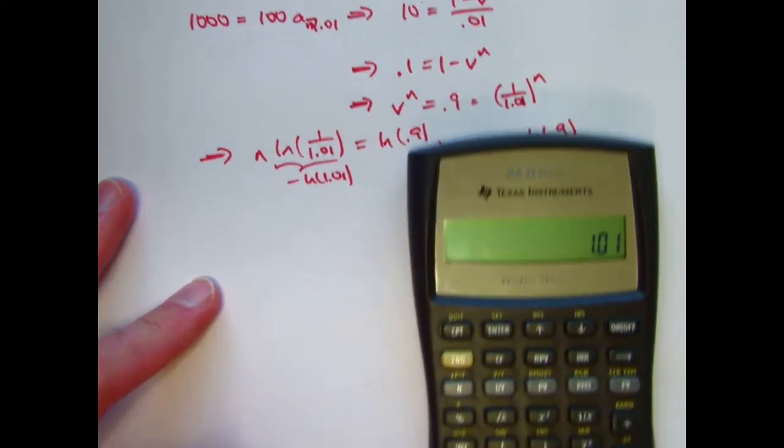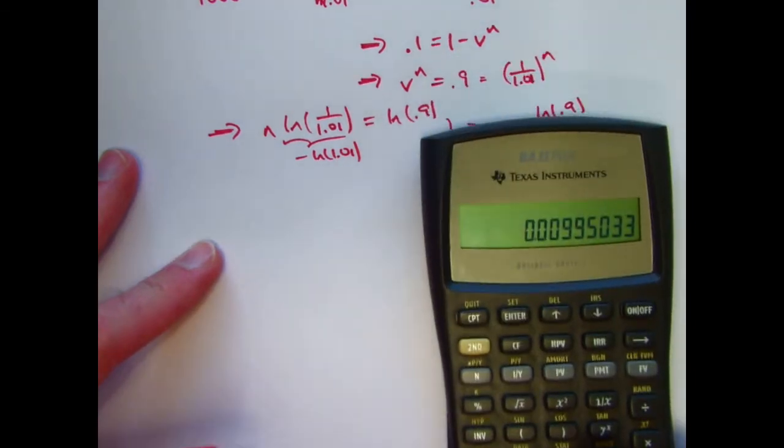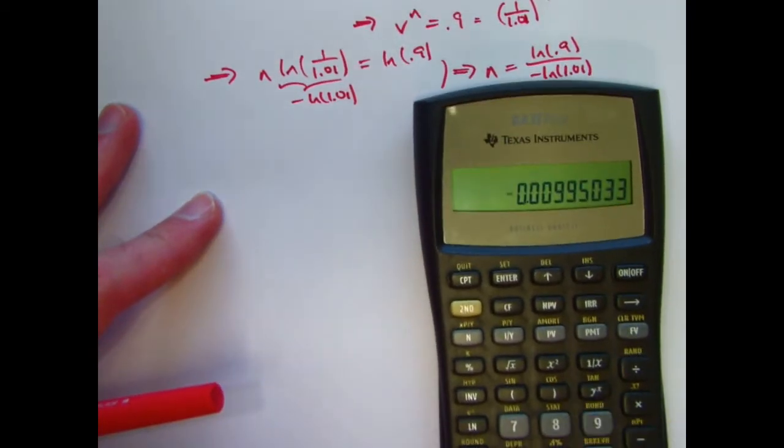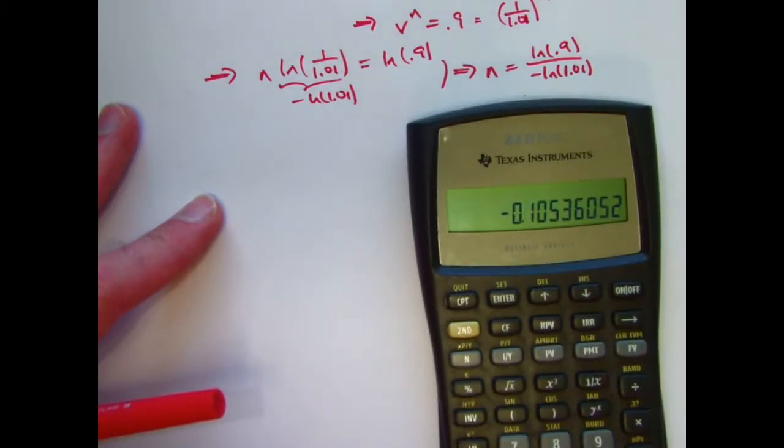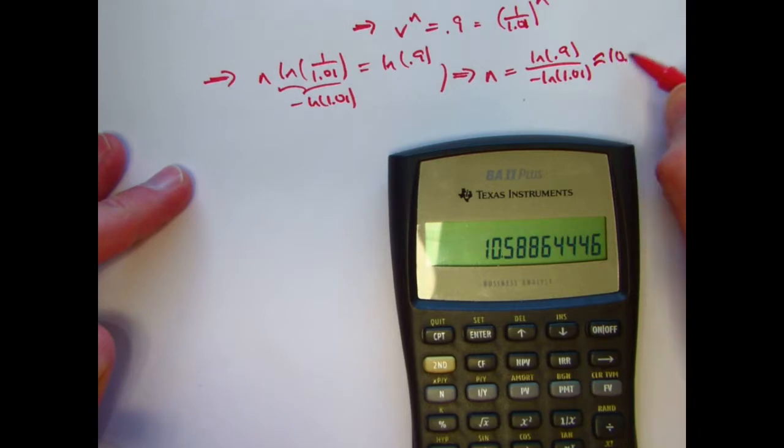Natural log of 1.01, press your ln button here, is this. Let's negate that and store it in register 0. Natural log 0.9 is going to be negative. It's this. Divide it by what's in register 0. We get n to be approximately 10.59.